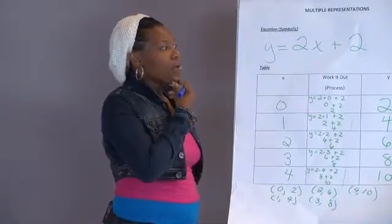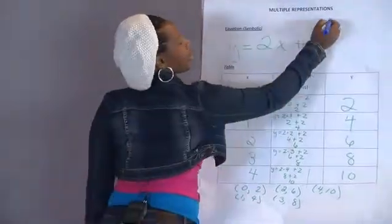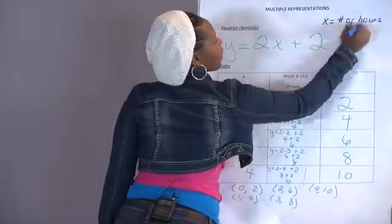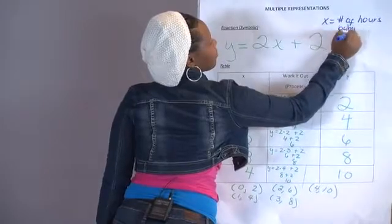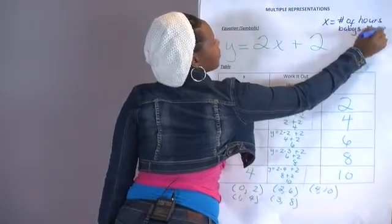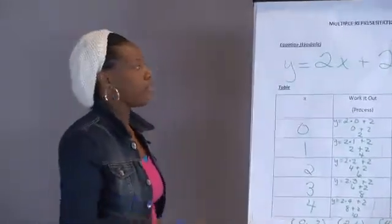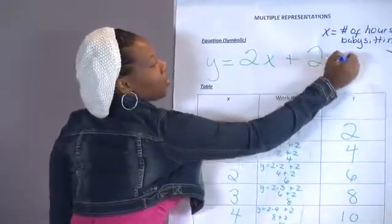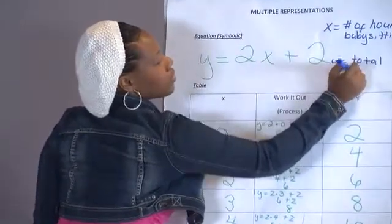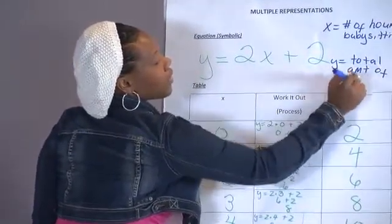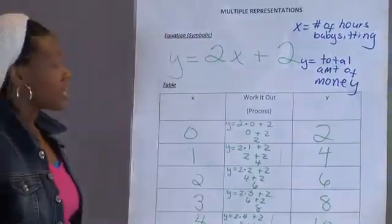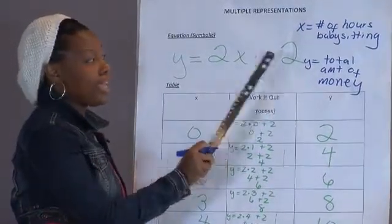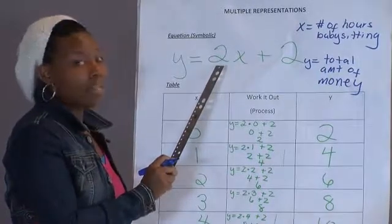Let's say that I wanted my x to be the number of hours that I babysat, since I do have to babysit my brother and sister now and then. And y is the total amount of money that I earned. How would this translate? It would translate if I said I already have $2. I get paid $2 for every hour that I babysit.